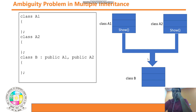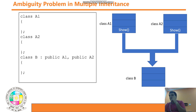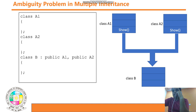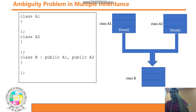Hello students. In this lecture we'll discuss a very important topic: the ambiguity problem in multiple inheritance. There are different types of inheritance, but in multiple inheritance there is a specific problem that we need to solve using a different method, which we will cover in this lecture.